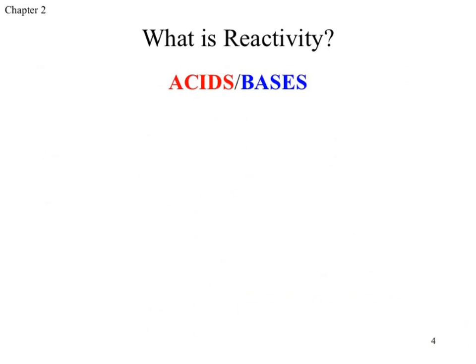What was an acid? Something that donated a positive hydrogen — a proton. What was our base? Something that accepted a proton — it needs to be negative. What did we just generate? A very strong attraction between a positive and a negative — ultimately an ionic bond that now pushes into a polar covalent bond, like H₂O. Our acid-base chemistry is taking that very strong attractive force and pushing it all the way into a bond.